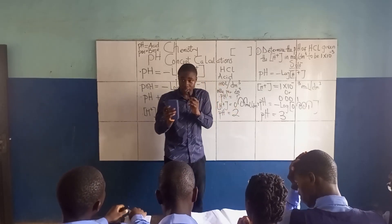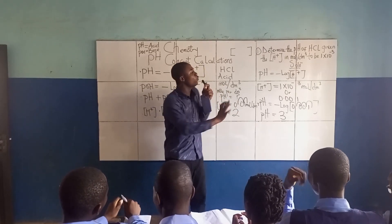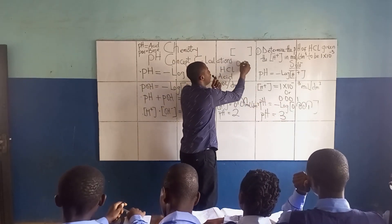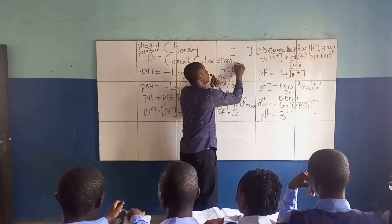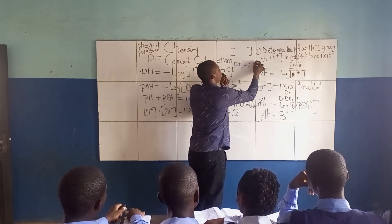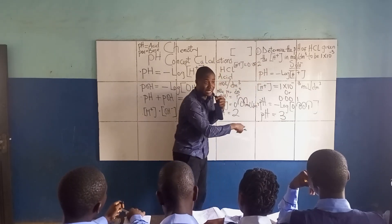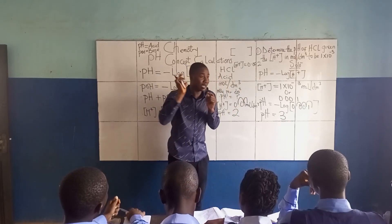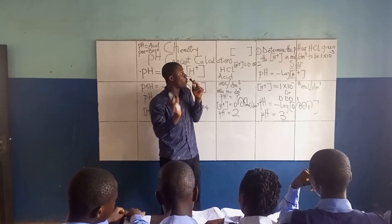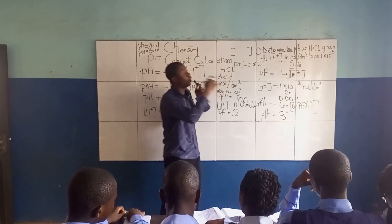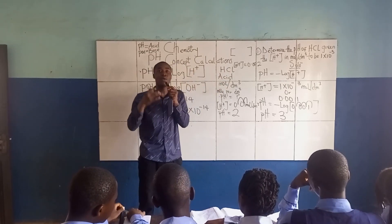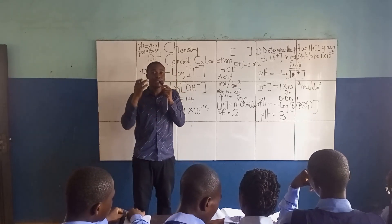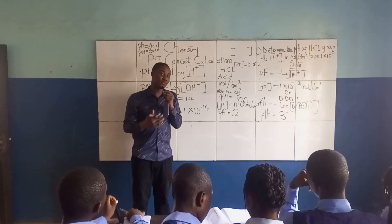That shortcut of counting decimal places only works when you have values like 0.001 or 0.01. When the value is something like 0.002, you cannot use that shortcut — you must input it into your calculator to get the answer. There is still more to learn about pH concept calculations. If you find this video lesson helpful, please click the subscribe button and share this video with your friends. Thanks for watching.